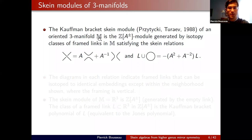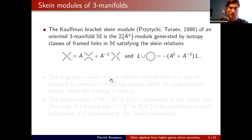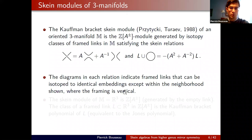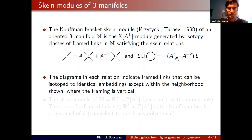Given an oriented 3-manifold M, consider all isotopy classes of framed links with coefficients over the ring of Laurent polynomials with integer coefficients in a formal variable A. One starts with the free module over all framed links and divides by the skein relations. In these diagrams the framing is vertical. The first relation involves three framed links related by a skein relation; the second relation allows removal of an unlinked unknot component at the cost of multiplying by an explicit element of the base ring.